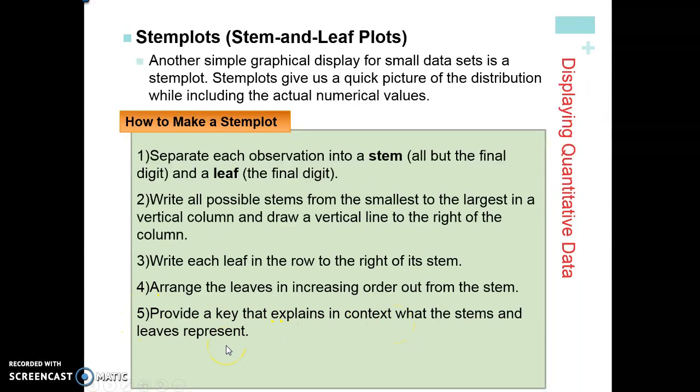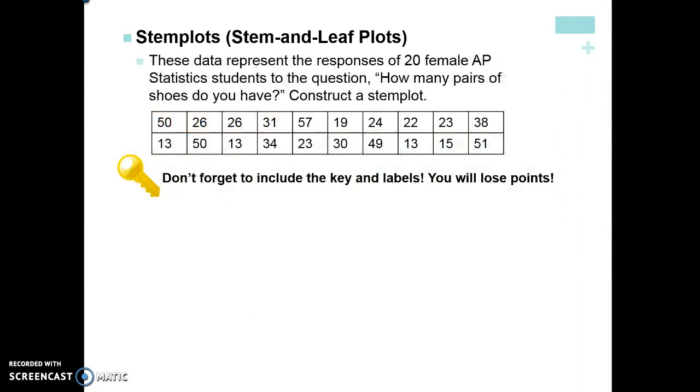Don't just write 1 vertical bar 2 equals 12. Well what does it equal? 12 iPods, 12 computers, 12 pieces of Snickers, whatever. Make sure you include what that is and make sure you also provide a title for your graph. So let's just take a look at this. I want you to try this. This data represents the responses of 20 female AP Statistics students to the question, 'How many pairs of shoes do you have?' So here are the number of shoes that some females have. Make a stem-and-leaf plot out of it, but don't forget to include your key in context and the labels. If not, you will lose points. So go ahead, hit pause, draw it, and then come back and see what your answer looks like.